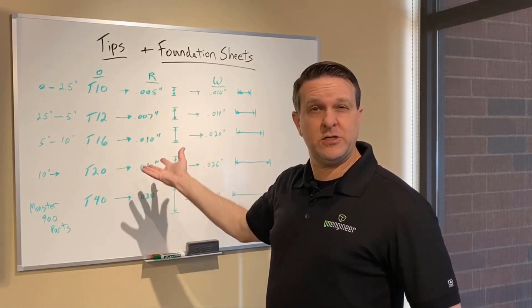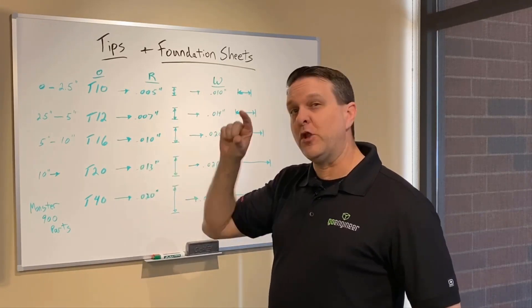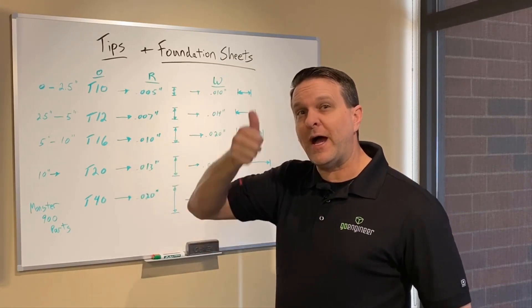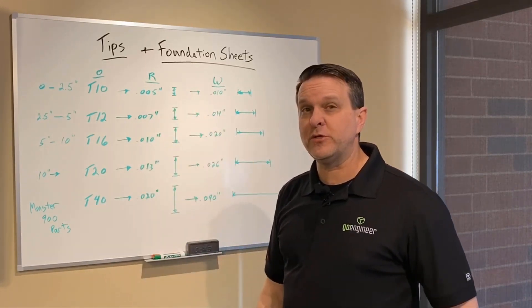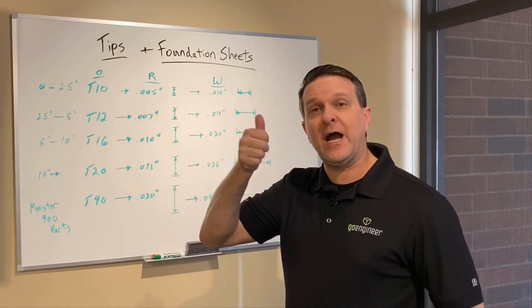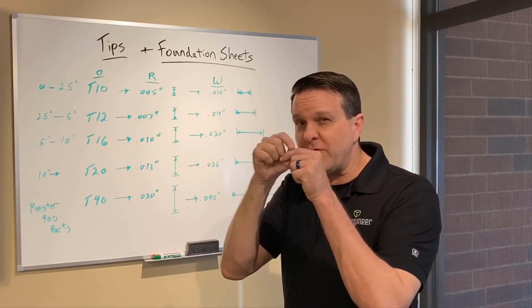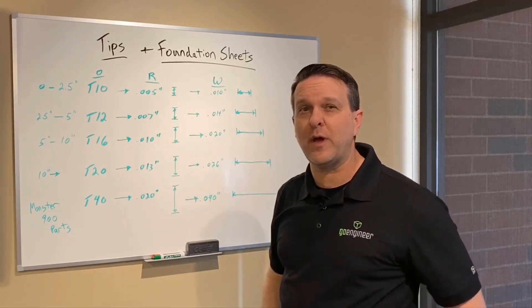And just in case you didn't know, resolution in the terms of 3D printing, the lower the number, the higher the resolution is. So a 5 thousandths resolution, low number, is a really high resolution, meaning that it's building very, very fine details throughout a part.